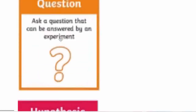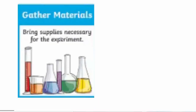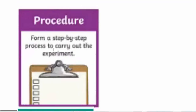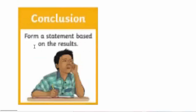So first is question, number two is hypothesis. Number three: in the scientific method, step three is we gather materials — we bring the supplies necessary for the experiment. Step four is procedure — we form a step-by-step process to carry out the experiment. The next step is results — we record what happened during the experiment.